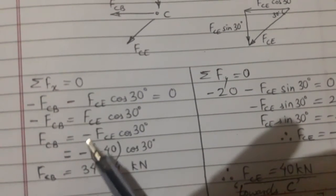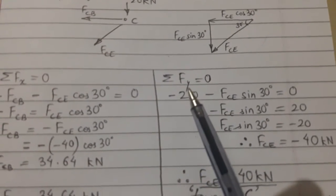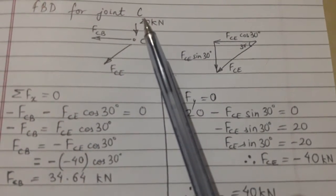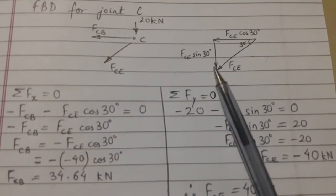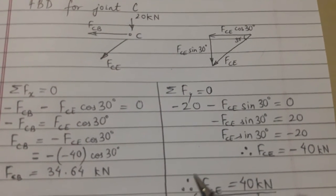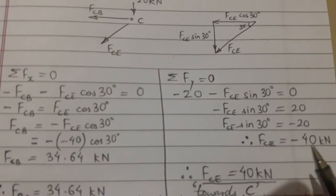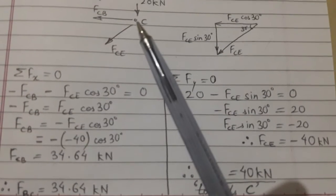For summation of Fy, the force which is downwards, that is 20 kN, and FCE sin 30 is also downwards, that's why negative. When we calculated, we got FCE as minus 40 kN. The minus sign shows that the direction which we have selected is wrong or incorrect.